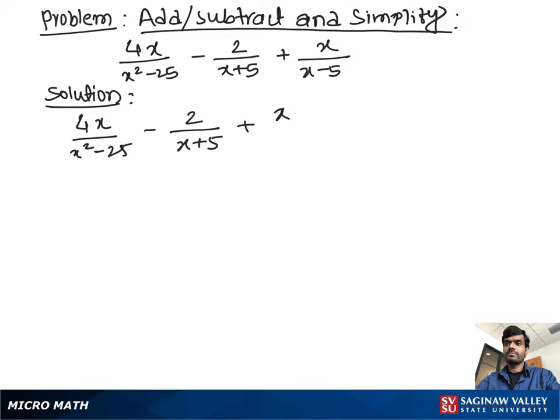As you see in the first term in the denominator, we can do factor. Let's do the factor for the first term in the denominator. x over x squared minus 25 can be factored out and you can have x plus 5 times x minus 5, minus 2 over x plus 5, plus x over x minus 5.